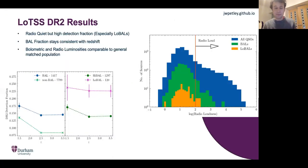So moving to the radio with the as yet unreleased LoTSS DR2 catalogue, we have actually managed to make the largest sample of radio matched BALs by around an order of magnitude. Studying this, we find that BALs, and in particular low BALs, have a strong increase in radio detection fraction compared to the general population. For low BALs, that's over three times as much.